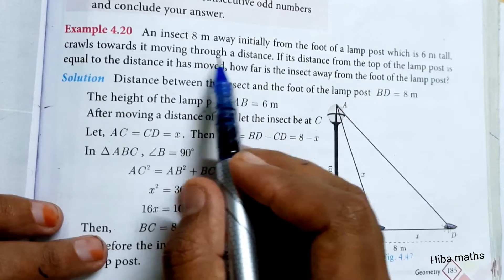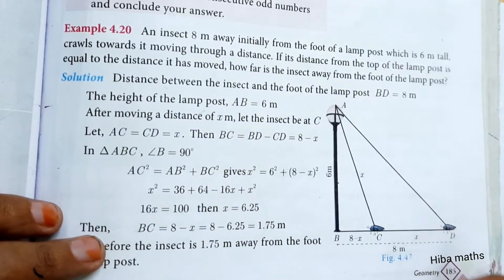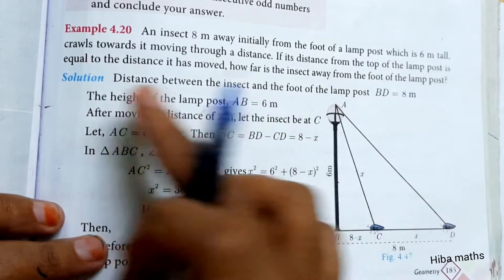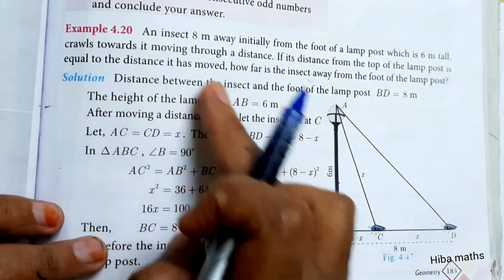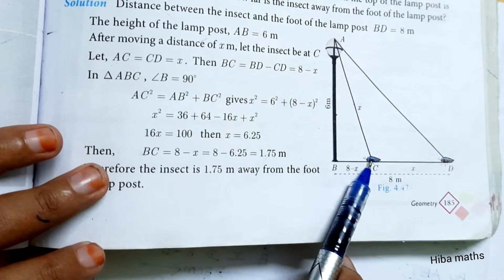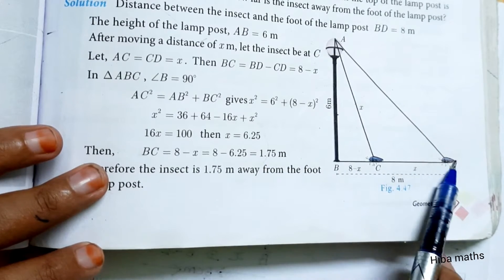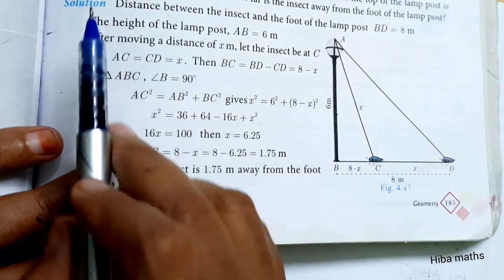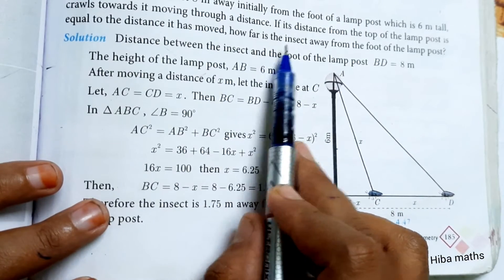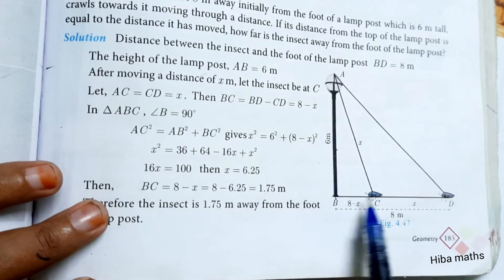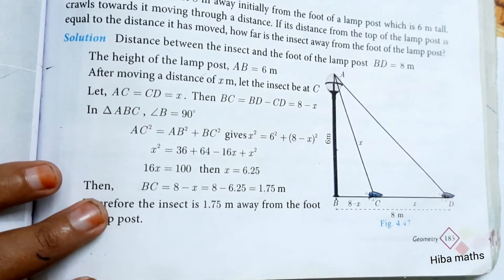The lamppost is 6 meters tall. The insect crawls towards it, moving through a distance. The distance from the top of the lamppost is equal to the distance it has moved. How far is the insect away from the foot of the lamppost? That's what we have to find.